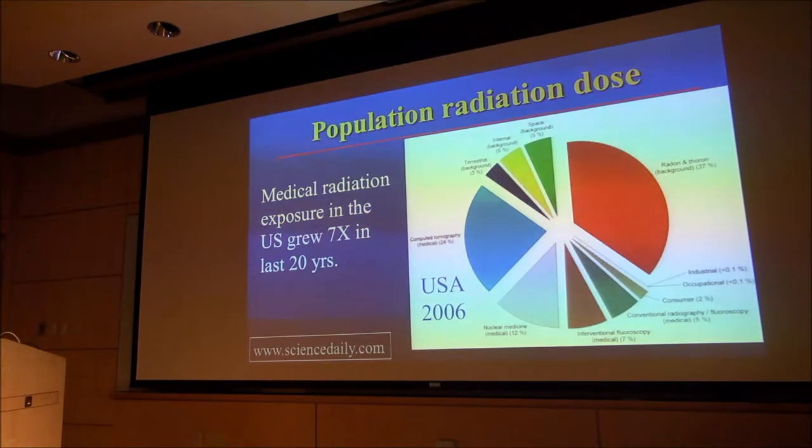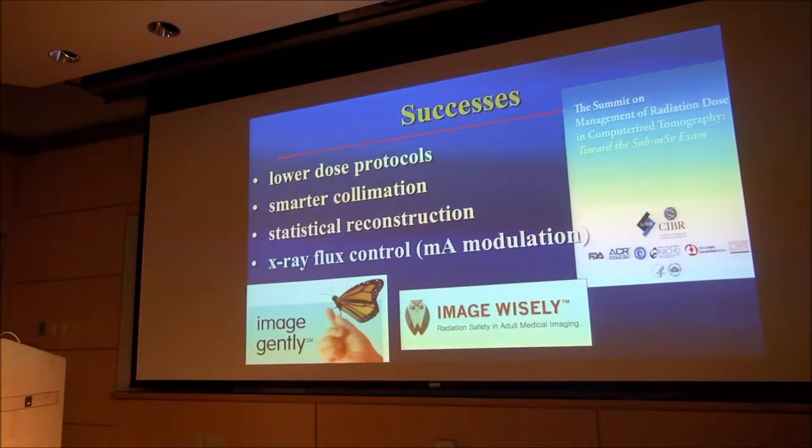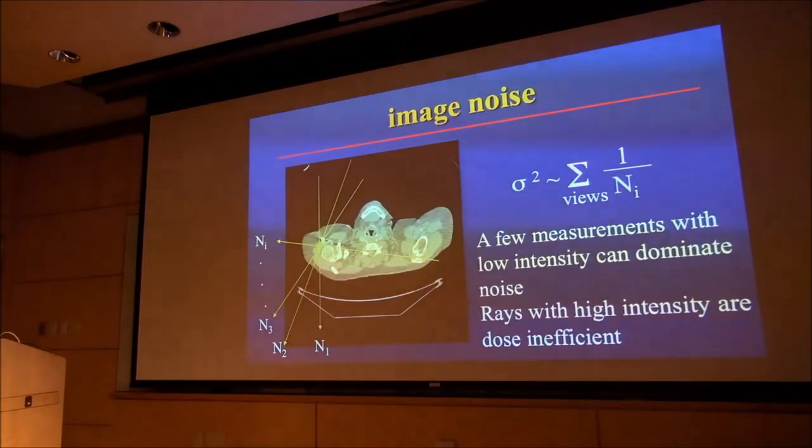I want to talk about the dose problem. Half of the radiation dose to the US population is man-made, half of that is from CT. We've really done a lot to reduce this over recent years. We have lower dose radiation protocols, much better collimators on CT systems, statistical reconstruction, and x-ray flux control such as MA modulation. Our professional societies are now much more cognizant of radiation issues and are working much harder to reduce the radiation dose to patients.